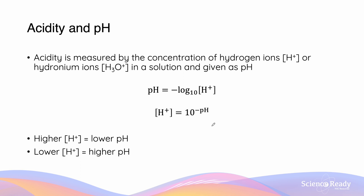The acidity of a particular substance is measured by the concentration of hydrogen ions, or hydronium ions, in that solution, and that's given to us as pH. That stands for the potential of hydrogen. The way that we calculate this potential of hydrogen is we use the formula: pH equals the negative log base 10 of the H+ concentration.